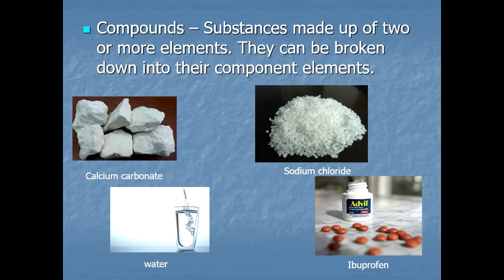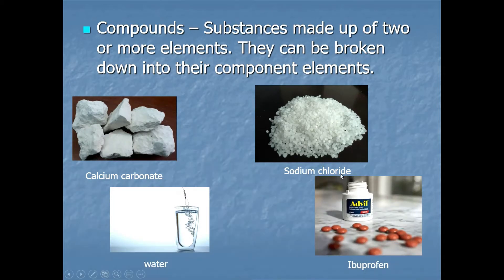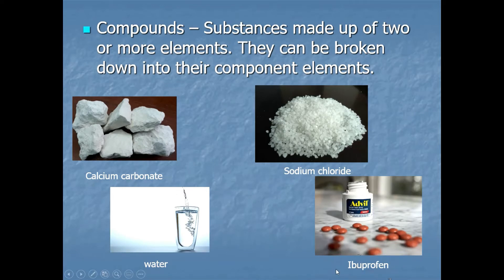Sodium chloride — table salt — is made up of just two elements: sodium and chlorine, so we call it sodium chloride. Water is also a compound because it's made up of hydrogen and oxygen. Here's a more complex example: Advil, whose generic compound name is ibuprofen. Most medicines have a generic name — the actual compound — and then brand names. Motrin and Advil are both ibuprofen.